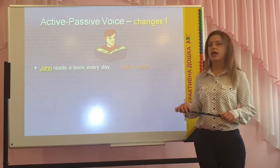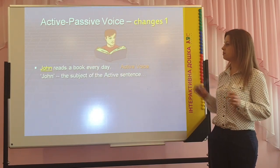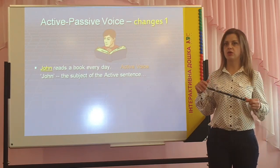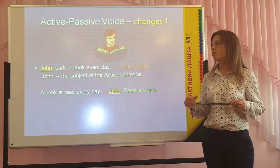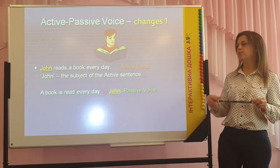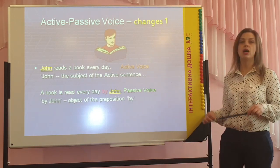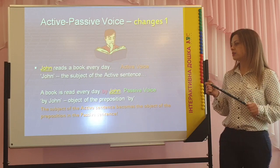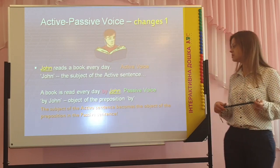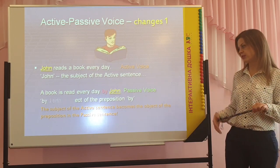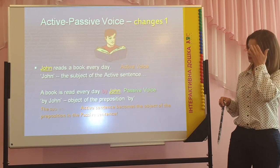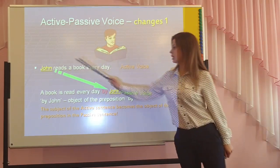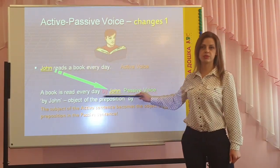John reads a book every day. Here we can see the present simple active. John is the subject of the active sentence. But in the passive voice, the book is read every day by John — 'by John' is the object of the preposition 'by'. The subject of the active sentence becomes the object of the preposition in the passive sentence.